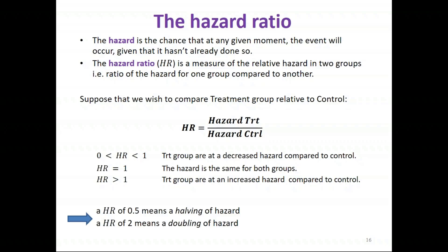A hazard ratio of 0.5 means there's a halving of hazard in the treatment group compared to control, while a hazard ratio of 2 means a doubling of hazard of the event in the treatment group.